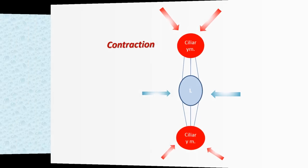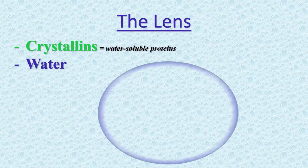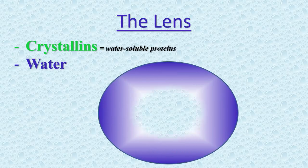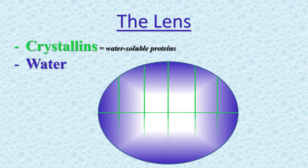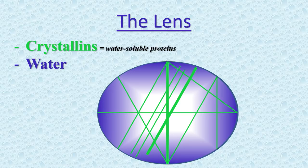The lens is made mostly of crystallins and water. Crystallins are water-soluble proteins that compose over 90% of the protein within the lens. The protein is arranged in a precise way that keeps the lens clear and lets light pass through it. In cataracts, some of the protein may clump together, resulting in clouding the lens. This process happens gradually.